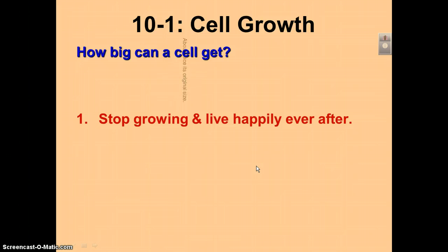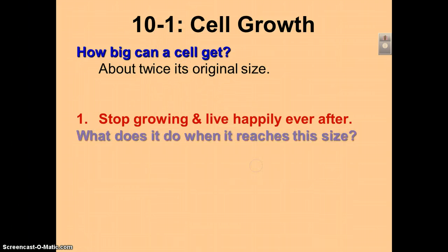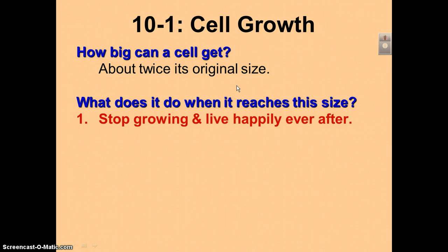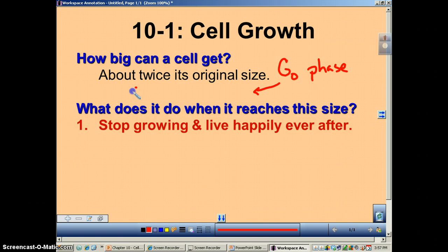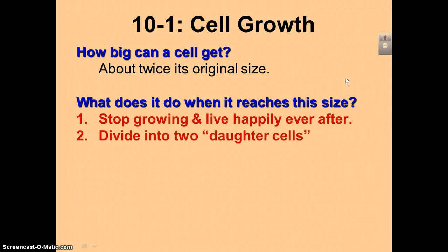So how big can a cell get? It can get about twice its original size. When it reaches twice its original size, it has two choices. Choice number one is to divide and then enter what is called the G0 phase — it stops dividing and will never go through cell division again, so it has no choice but to live happily ever after. Most of the cells in your body are going to do this. The second choice is to divide into two daughter cells.